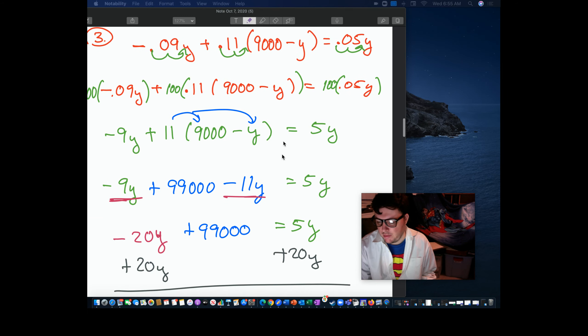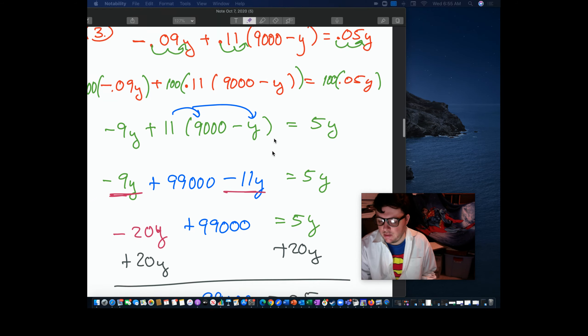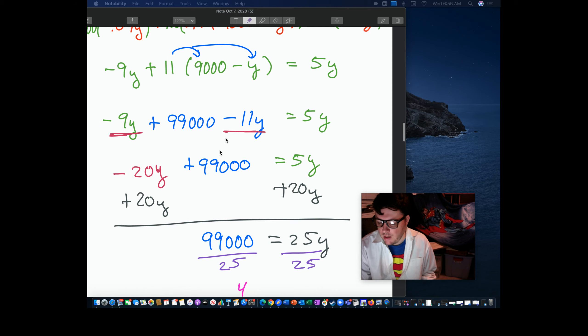That's going to leave me here in green. Negative 9y plus 11 times y. 9,000 minus y equals 5y. Distribute the 11. And once we're here, I go in.